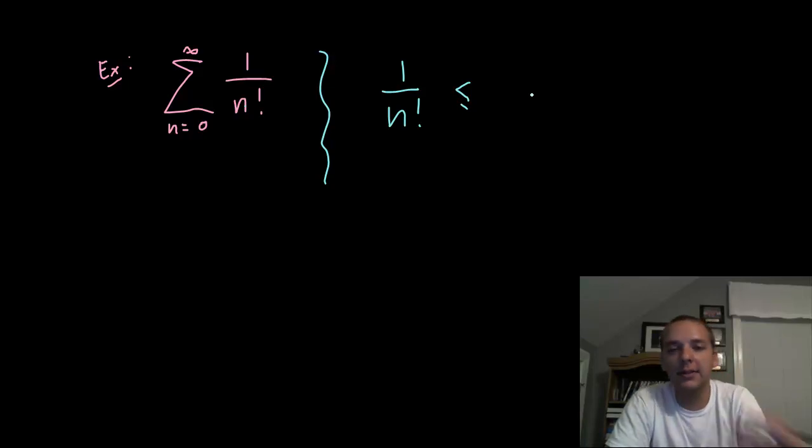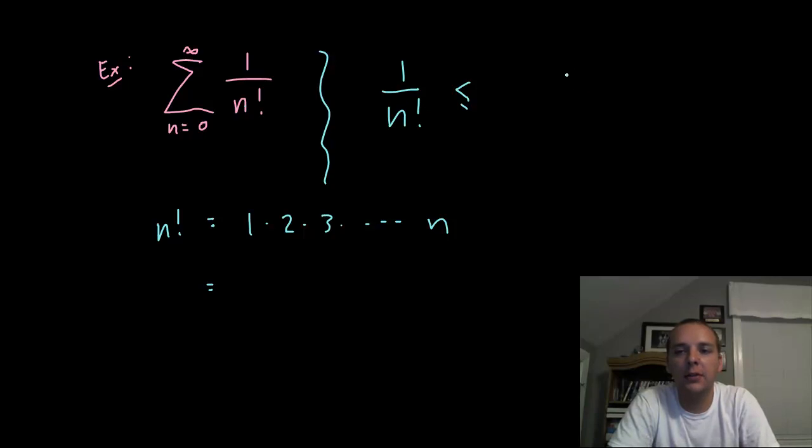Here's the trick we use: n factorial is 1×2×3×4×5×6 until you get to n. Now if we're trying to make this fraction larger, then the terms that we're comparing to n factorial need to be smaller in fact. So check this out: 2 is less than or equal to 2, 2 is less than or equal to 3, 2 is less than or equal to 4, 5, 6, 7, 8 and n.